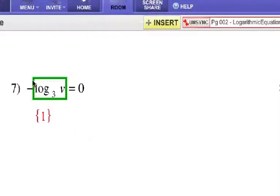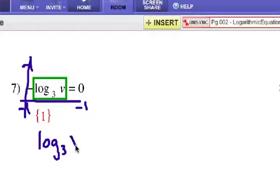Number seven. Think of this negative sign in front as a negative one times that logarithmic expression. So really, to get rid of it, I'm going to divide each side by negative one. Which becomes a little interesting here. What's zero divided by negative one? Well, it's still going to be zero. So, we have log base three of v equals zero.